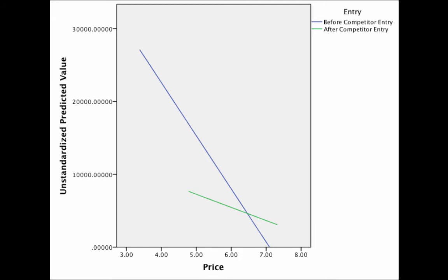But most importantly, we see a difference in the slopes. Prior to competitor entry, price sensitivity was very, very high. As price went down, sales went down very, very quickly. That wasn't the case after competitor entry. In other words, as price went down after competitor entry, the response on sales was much less severe. This slope is less extreme. This is the nature of our interaction.